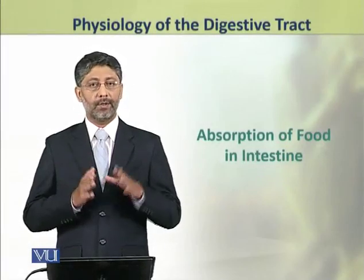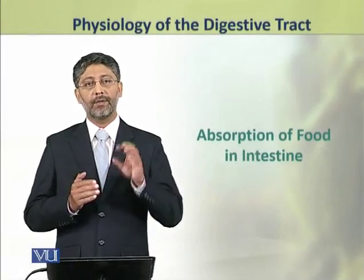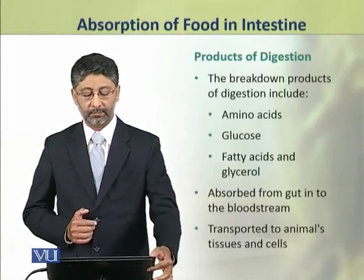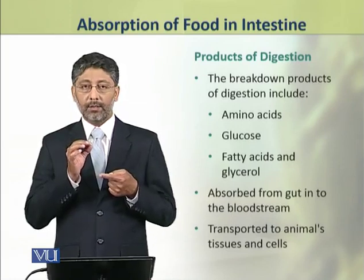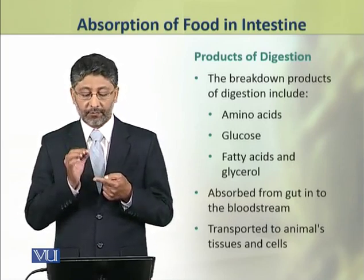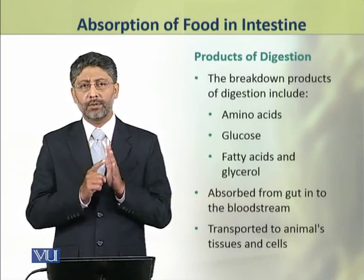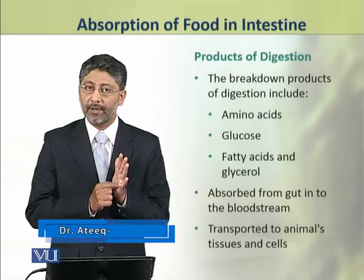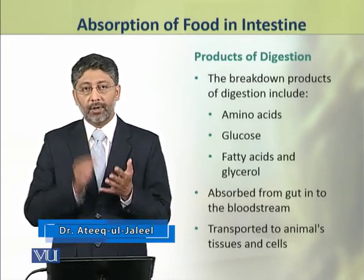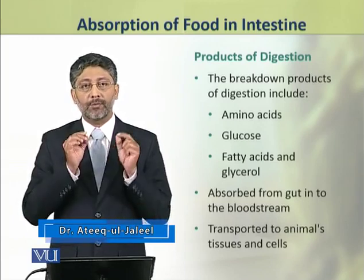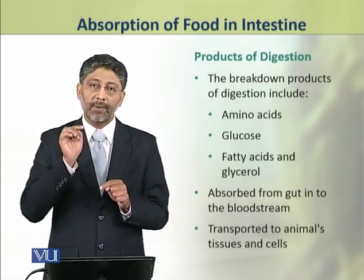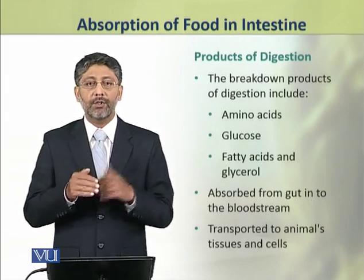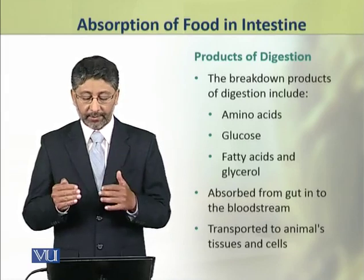Dear students, in this topic we shall discuss the absorption of food in the intestine. The breakdown products of digestion include amino acids, glucose, fatty acids and glycerol. These products of digestion are absorbed from the gut into the bloodstream and are transported to animals' tissues and cells by the blood.